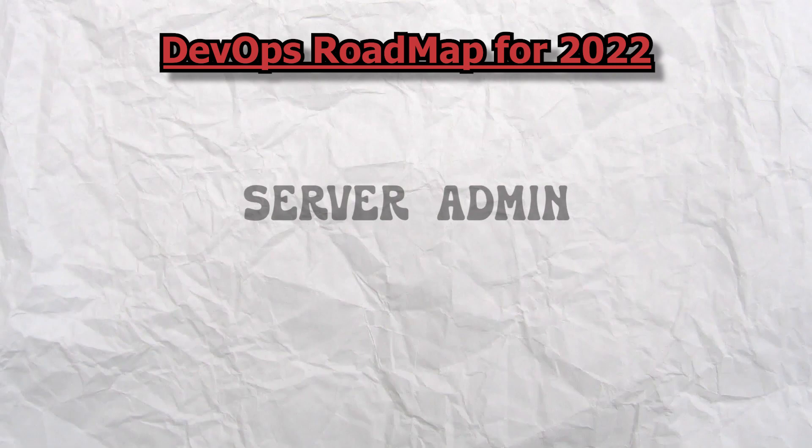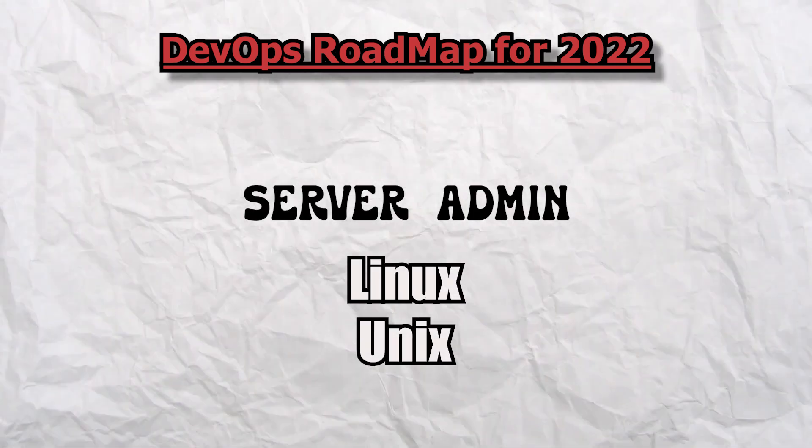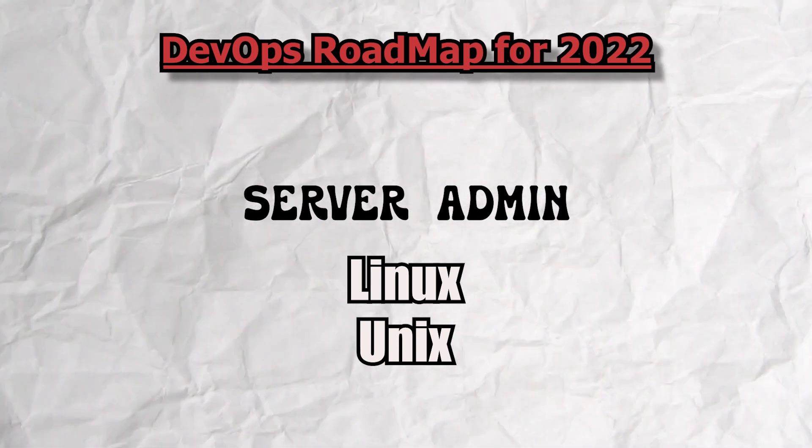Segment nine: you need to be a server admin to some degree. There are two types — Linux and Unix — but make sure you know Linux administration very well. Consider taking a certification if it fits your budget. Key skills include creating logical volumes, creating users, managing access, and ensuring your server is security-compliant. All of these fall under Linux server administration.